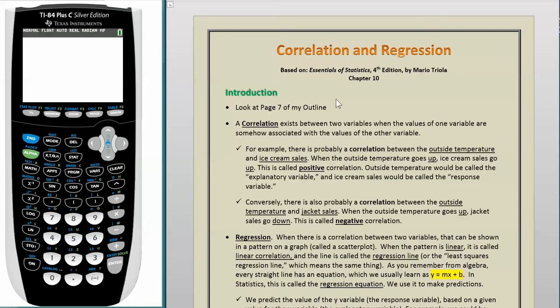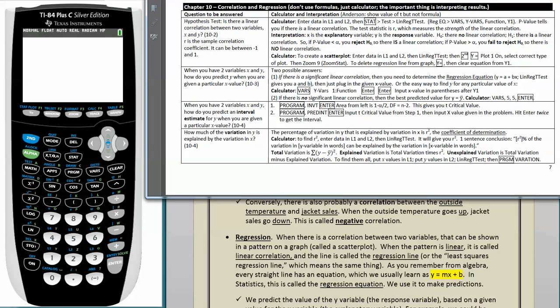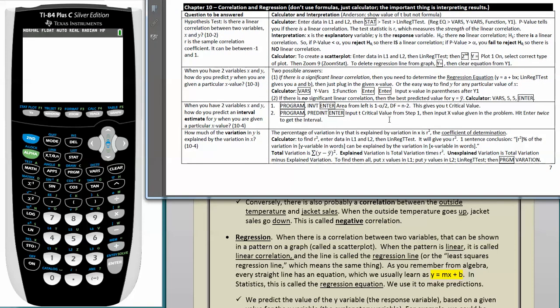If we look at this paper here, it says Introduction. Look at page 7 of my outline. Here is the bottom part of page 7, this white area here. You see it says Chapter 10, Correlation and Regression, and this is page 7. We're going to be covering each of these areas, so if you have my outline, you can refer back to it and follow along as we address these different types of questions.